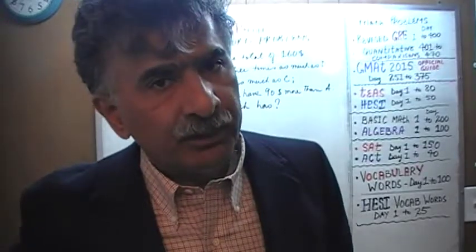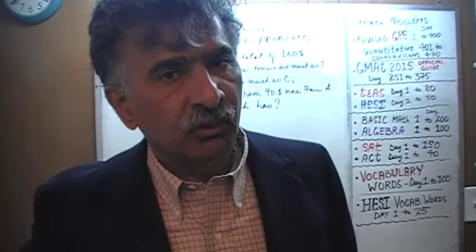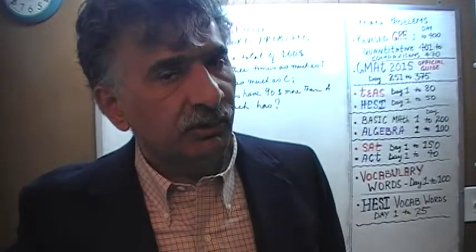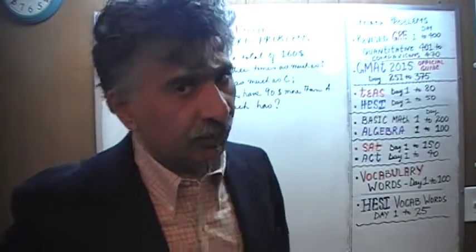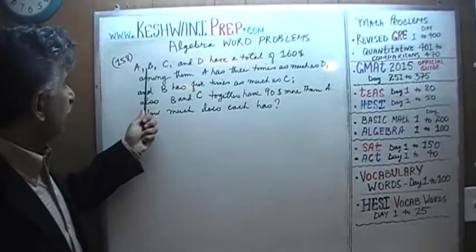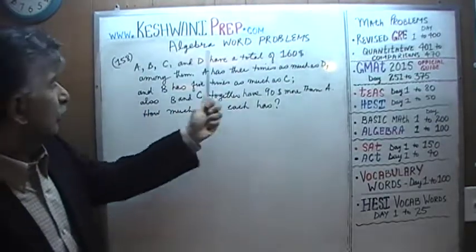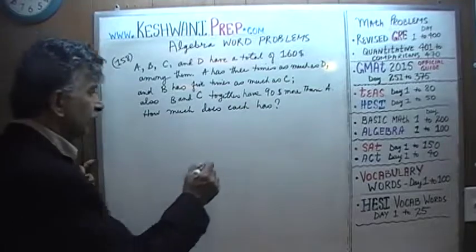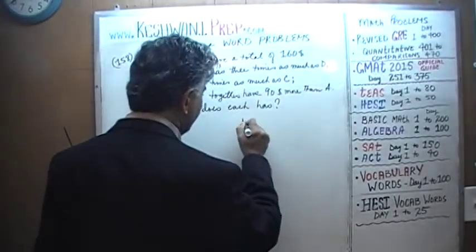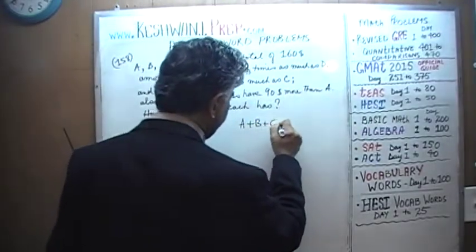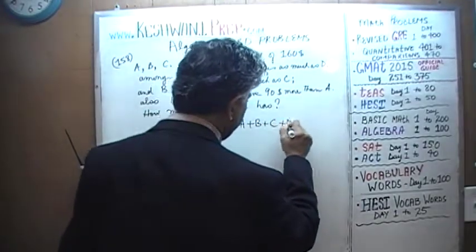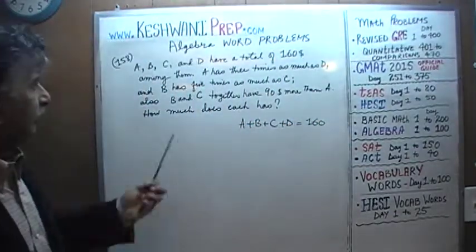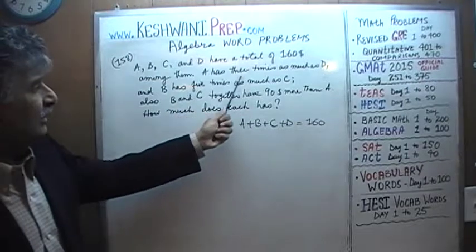We use the same variables as their names. Therefore we have four unknowns: A, B, C, and D. We need four independent equations to be able to solve for each of these variables. The first thing we know is that A, B, C, and D have a total of 160 dollars — that's our first equation: A + B + C + D = 160.